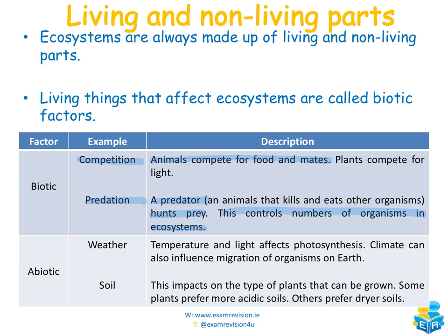If there aren't large numbers of prey for predators to eat, the number of predators could also fall. Abiotic factors include weather and soil — climatic factors for weather and edaphic factors for soil. Temperature and light can affect photosynthesis: more sunlight means more photosynthesis. Climate can also influence migration of organisms. Soil can impact the type of plants that grow — some prefer more acidic soils, others prefer drier soils.